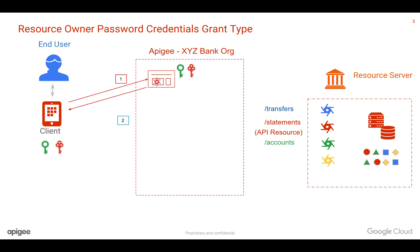In the second step, the end user authenticates using the mobile app, where they provide the username and password. This information is sent to the Apigee proxy — let's call it the OAuth proxy or token generation endpoint.